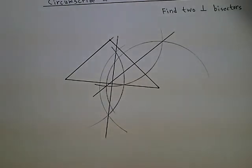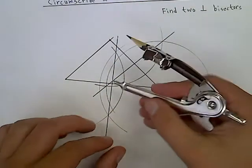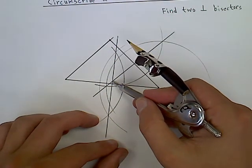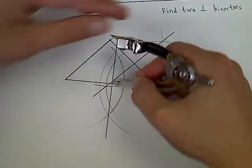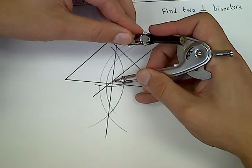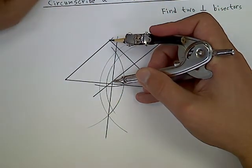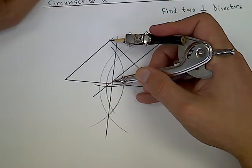Okay, now we're practically done. Now we put the point of the compass on the intersection of the two perpendicular bisectors, and then get a radius to one vertex. And now we just draw a circle.